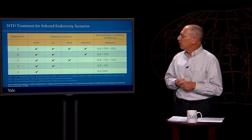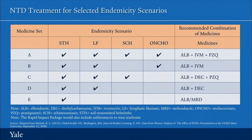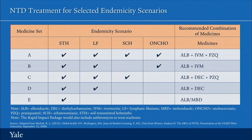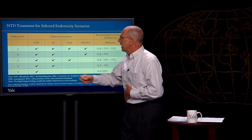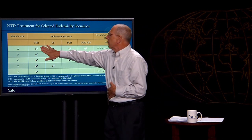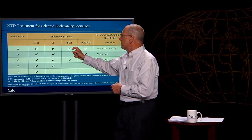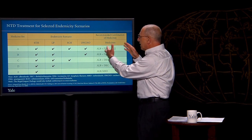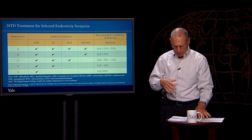Let's look at a graphic of these endemicity scenarios. Let's imagine Uganda and its districts, and think about having mapped the different NTDs that are prevalent in different districts. If a district should only have soil-transmitted helminths, drugs such as albendazole and mebendazole would be given. If a district has soil-transmitted helminths, lymphatic filariasis, and schistosomiasis, the appropriate drugs for that would be given. And if it were a district that had soil-transmitted helminths, lymphatic filariasis, schistosomiasis, and onchocerciasis, then another package of drugs would be provided to the people in those communities.